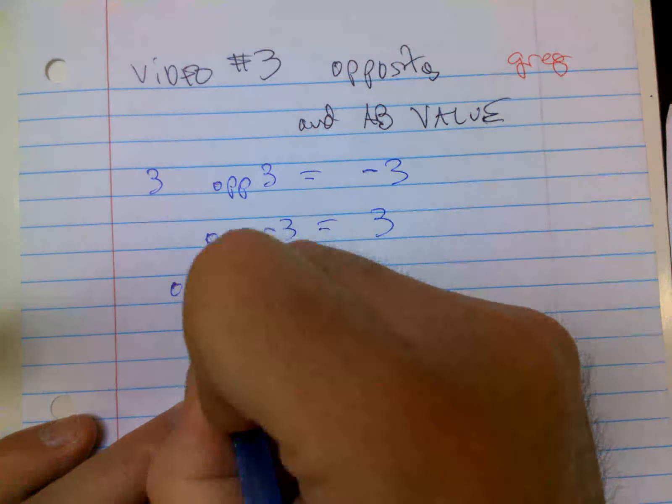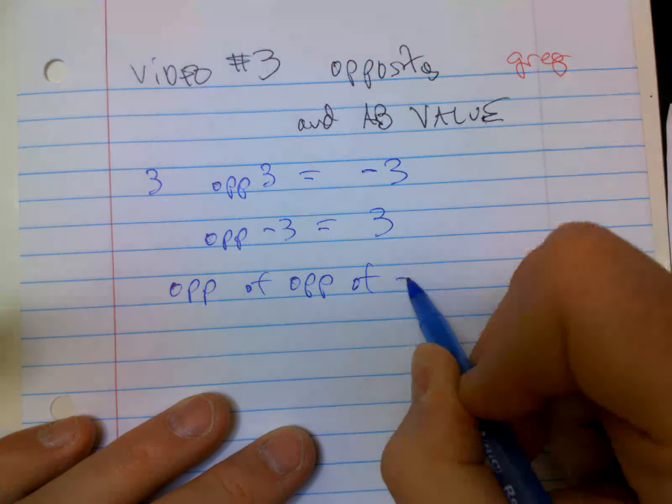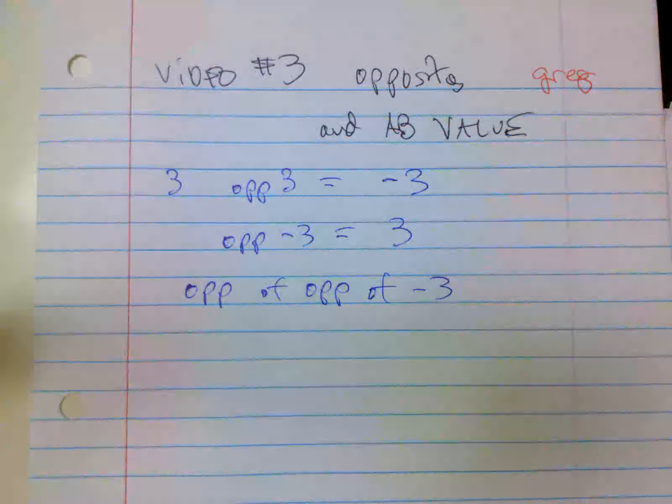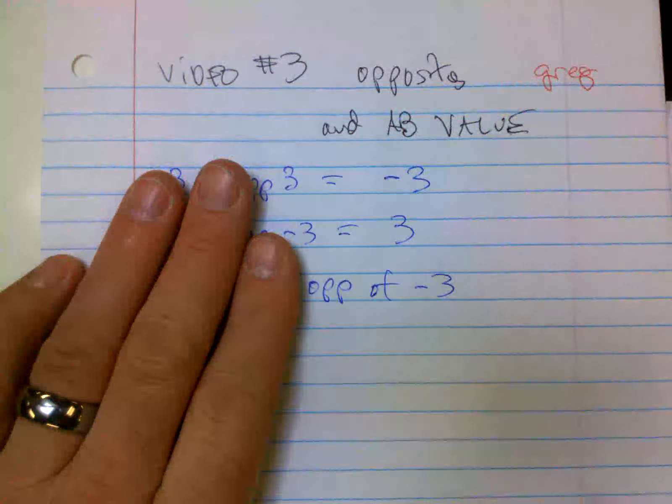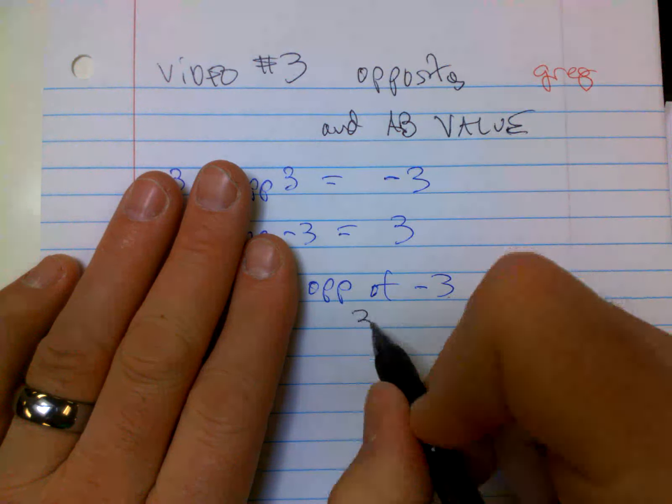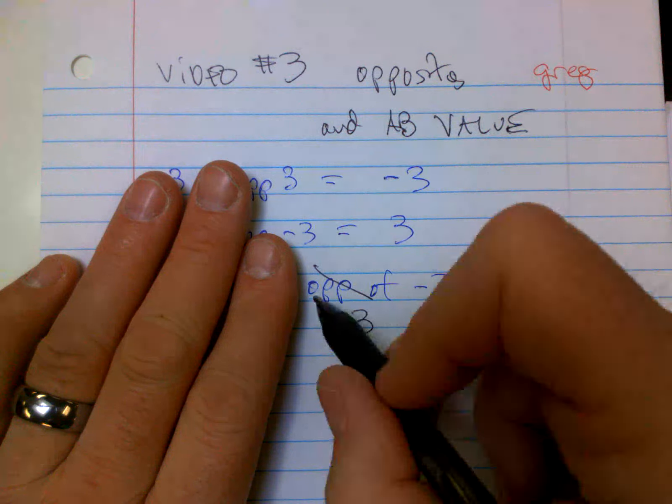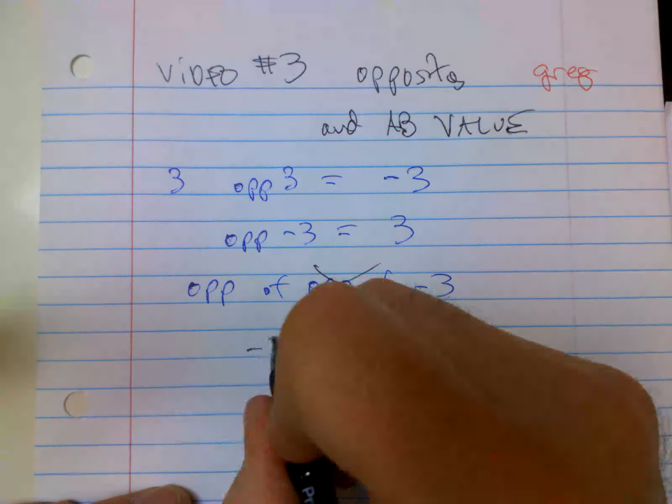What about the opposite of the opposite of negative three? There might be every year I see at least one, sometimes two questions where they try to get real crazy with opposites. Look, just do one step at a time. Let's go to the one closest to the negative three first. The opposite of negative three would be three. I just did that one.